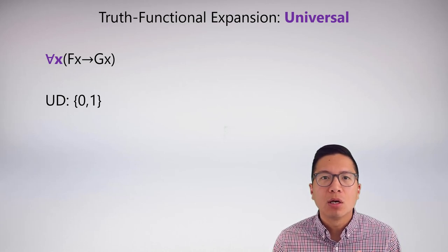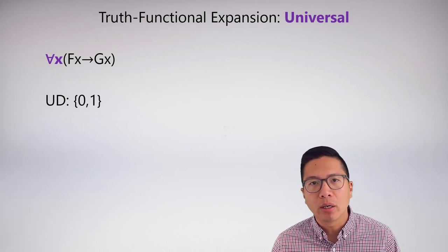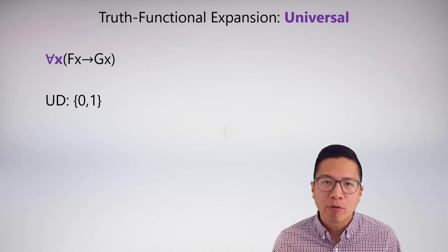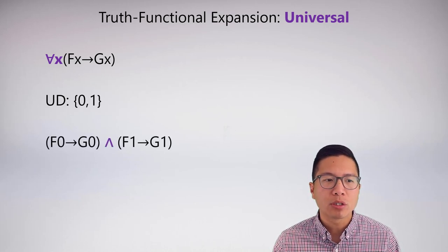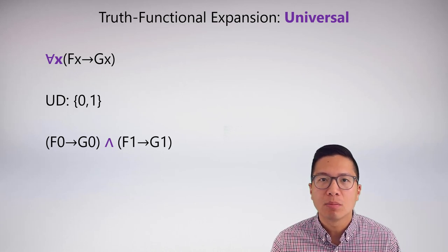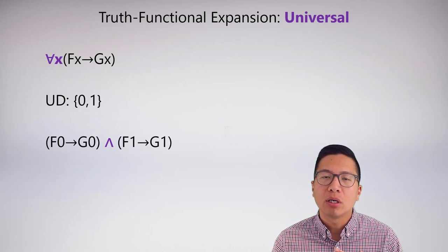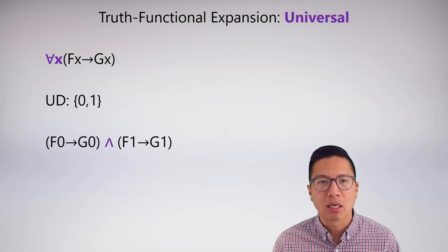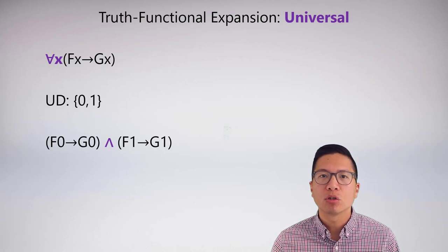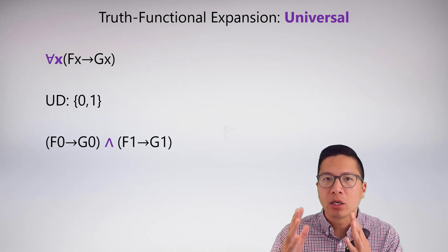If you think about the statement 'for all x, Fx arrow Gx' with a universe of discourse of 0 and 1, what must it mean for this to be true? If a universal means it's true for all members of the universe of discourse, then this sentence must be true for 0 and for 1. We can capture that by expanding out the sentence as a conjunction. The conjunction is the main connective, tied to the universal. Whenever we have a universal statement, it really means a string of statements must be true, joined by a conjunction.